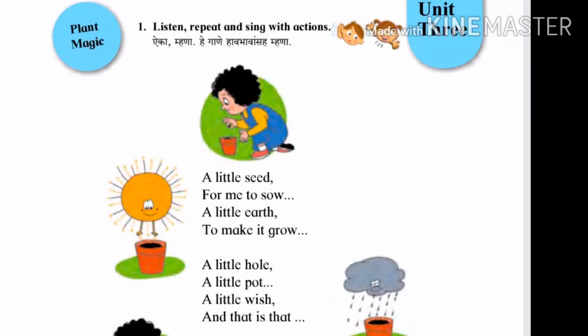Hello friends, welcome to my channel Rajumore Education. Today we are going to discuss about third standard English poem, Plant Magic. Plant Magic means ropte chi jadu — plant means ropte, magic means jadu. Now we see what magic is given about plant in this poem.